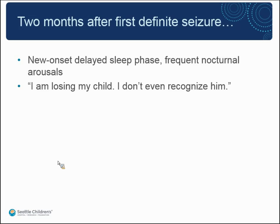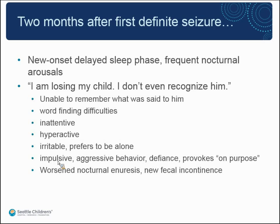Mom described a very rapid decline and loss of various skills, saying 'I'm losing my child, I don't even recognize him.' He was unable to remember what was said to him even a few minutes later — very different from before seizure onset. Word-finding difficulties, worsened inattentiveness and hyperactivity, irritability, preferring to be alone, impulsivity, shouting out of turn, throwing things and hitting, aggressive behavior, defiance. Mom said he seems to provoke people on purpose. He also had worsened nocturnal enuresis and new nocturnal fecal incontinence. He was diagnosed with ADHD and ODD.